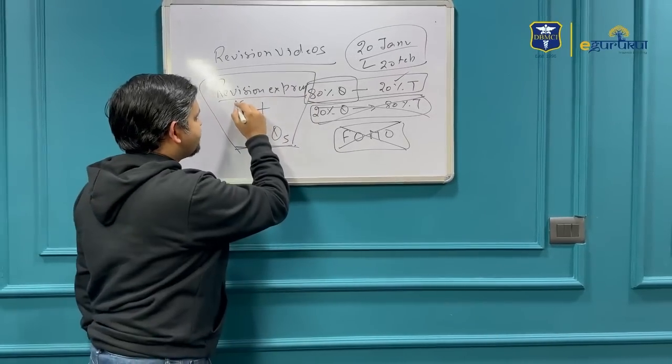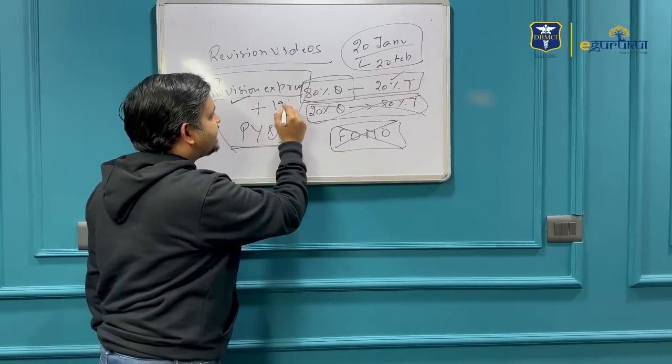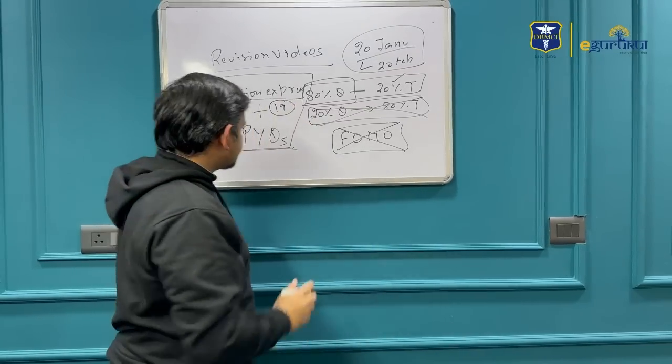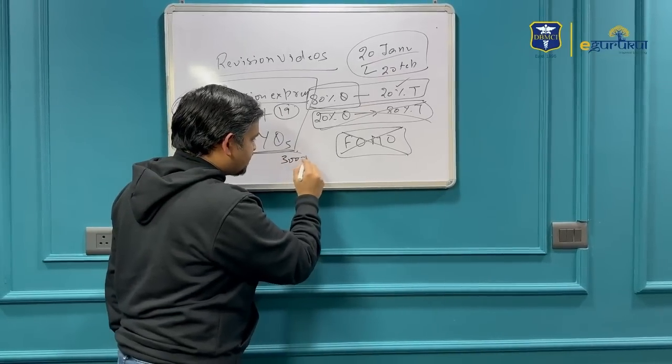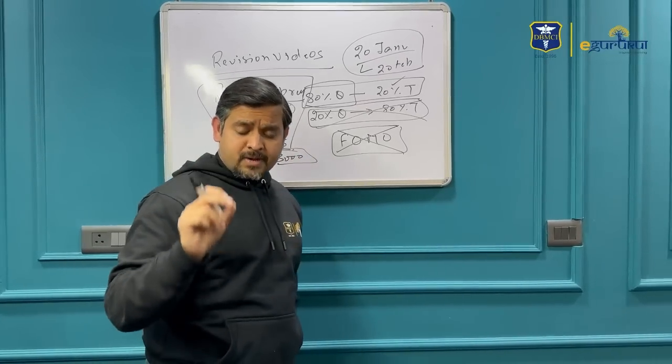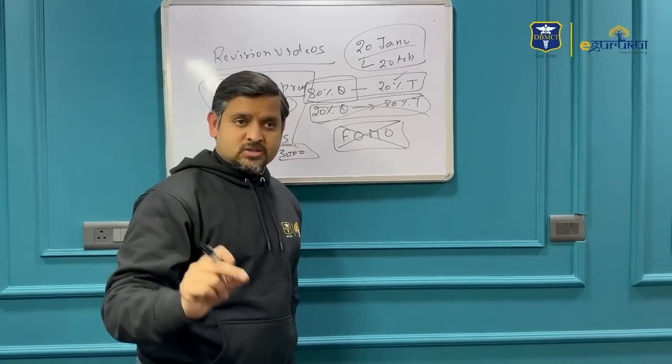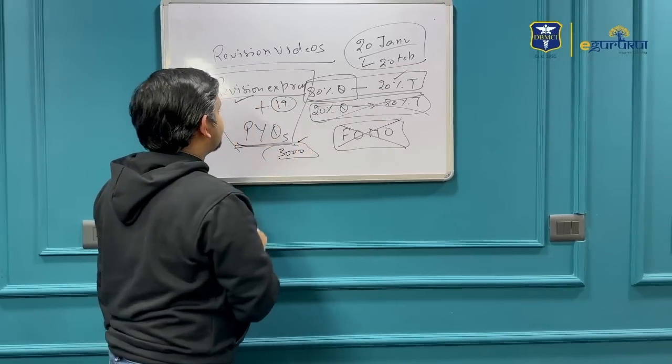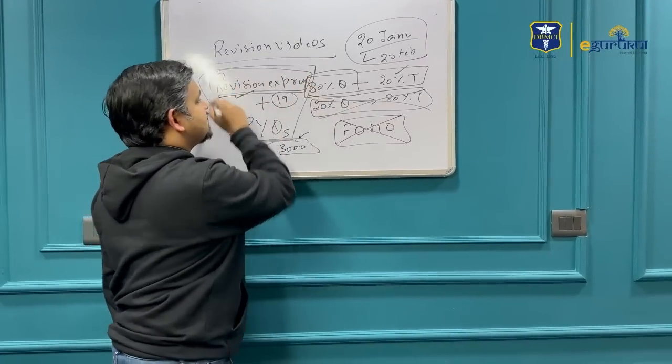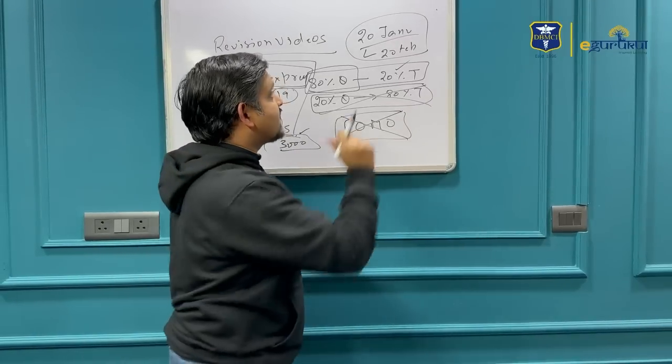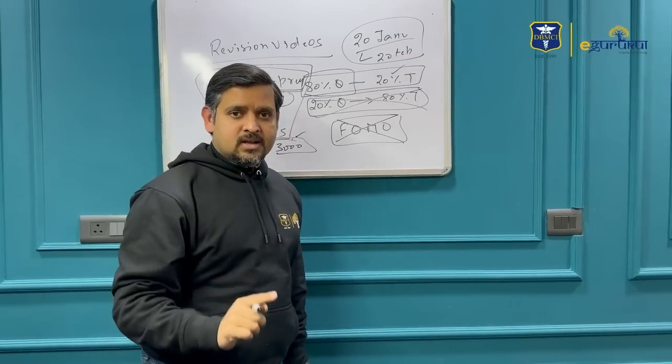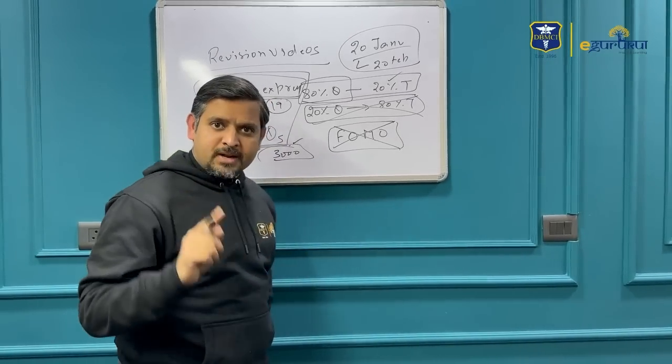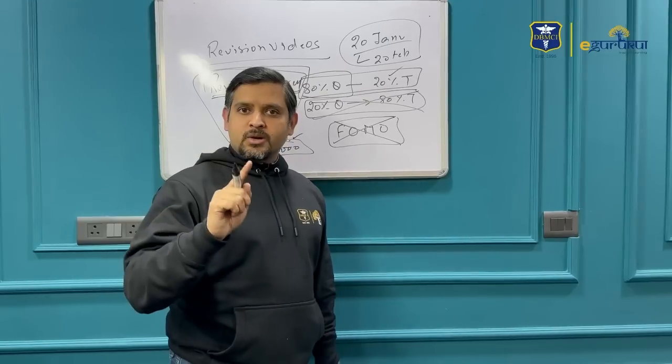In this one month, you have to do all the 19 subject Revision Express videos and all the PYQs. There are around 3000 PYQs in the iGorukul app in the section of recall questions. All the 3000 PYQs, all the Revision Express videos of all 19 subjects - starting from 20th January to 20th February. This is your target, and if you are able to complete it...